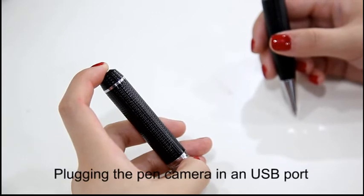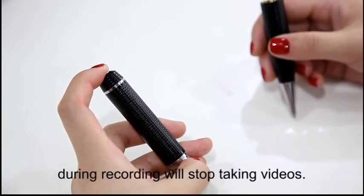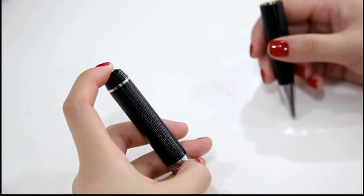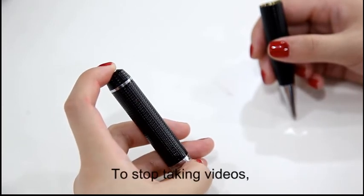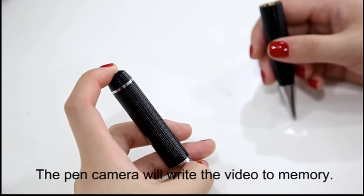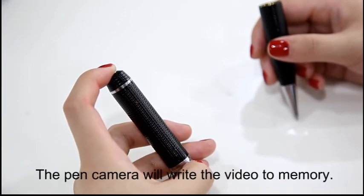Plugging the pen camera in a USB port during the recording will stop taking videos. To stop taking videos, press the button only one time. The pen camera will write the video to memory.